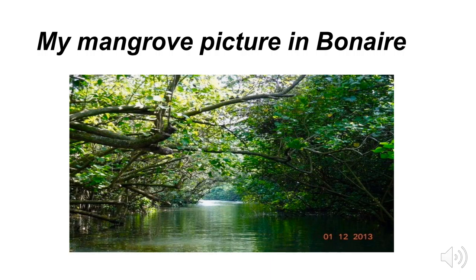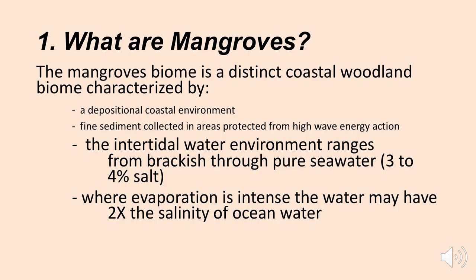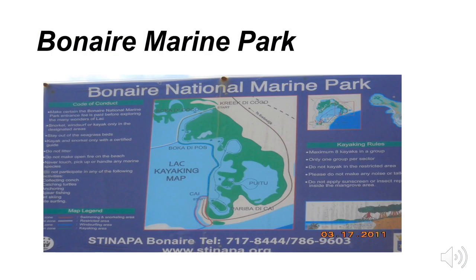Here's a mangrove I photographed in Bonaire in the Caribbean, just north of Venezuela. You can see that you're in a woodland, swampy environment along the coastline. The intertidal water environment ranges from brackish water, which is only slightly salty, to pure sea water containing three to four percent salt. Where evaporation is very intense in very hot conditions, the water may have two times the salinity of normal ocean water, so these trees live in a pretty harsh environment.